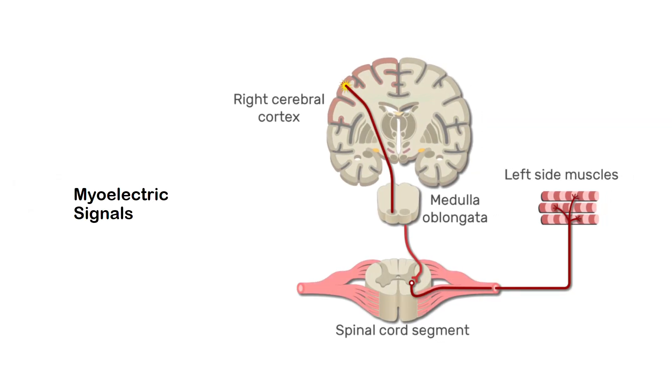The movement of the human body is possible through muscles in coordination with the brain. The brain sends excitation signals through the central nervous system, more specifically through the spinal cord.